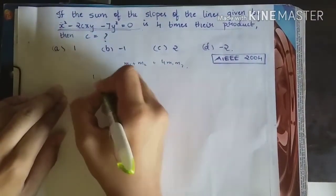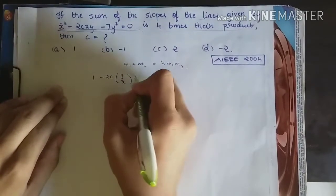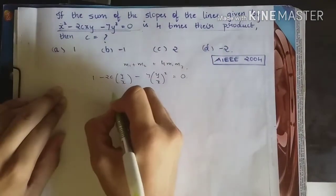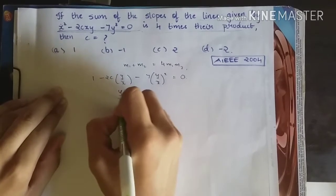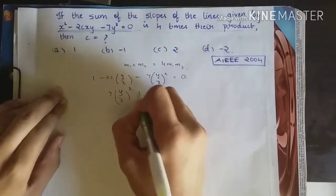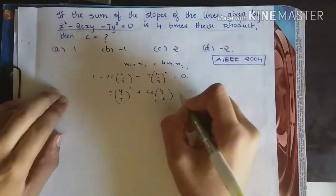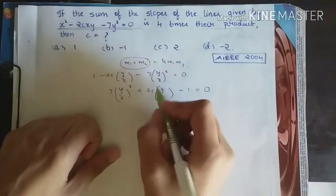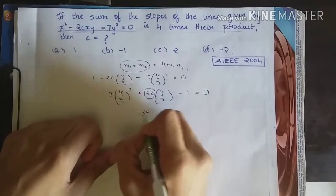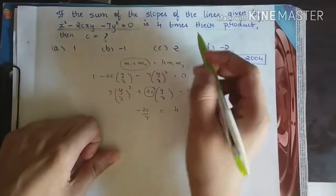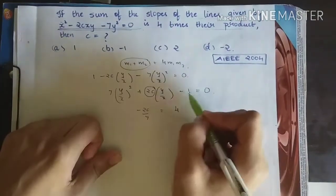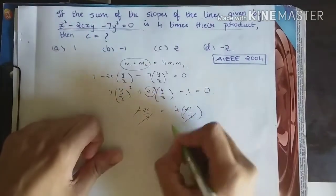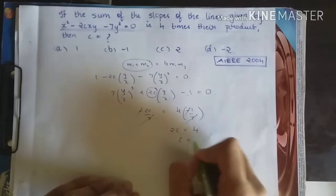So if I divide the equation by x square, I will get 1 minus 2c times y by x minus 7 into y by x whole square equal to 0. So if I write in the normal form, in the sense our general way, y by x whole square, there will be a 7 plus 2c into y by x minus 1 equal to 0. They are telling m1 plus m2 is equal to 4 times m1m2. What is m1 plus m2 from our equation? Minus 2c by 7 equal to 4 times product of the slope. That is c by a minus 1 by 7 into minus 1 by 7. 7 and 7 gets cancelled. The minus and minus gets cancelled. I will be left with 2c is equal to 4 and hence I get c is equal to 2.